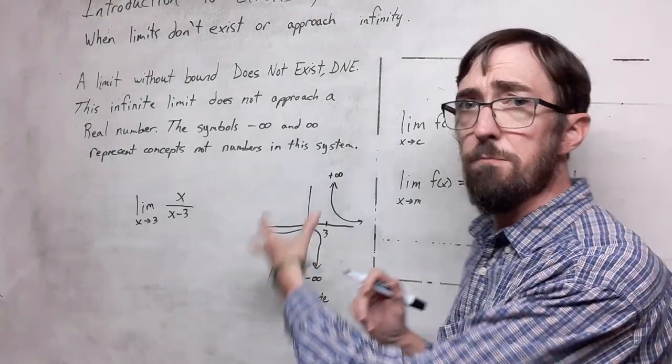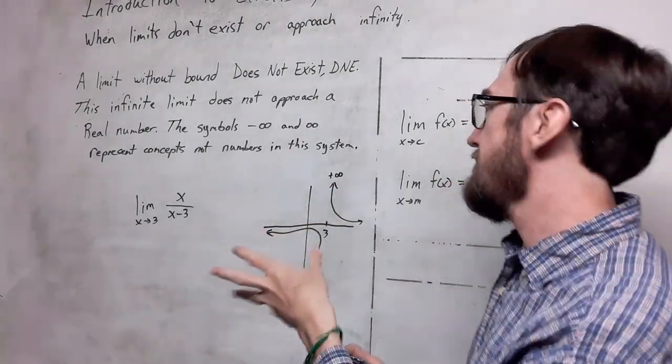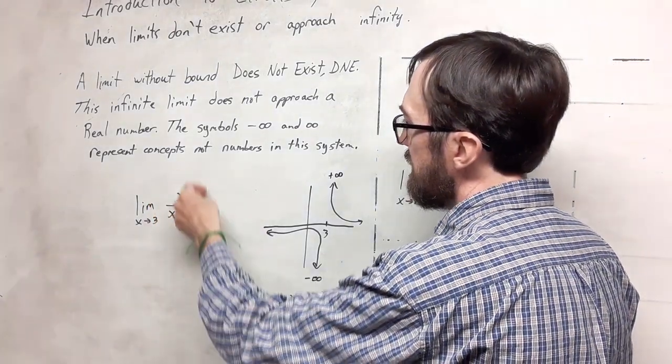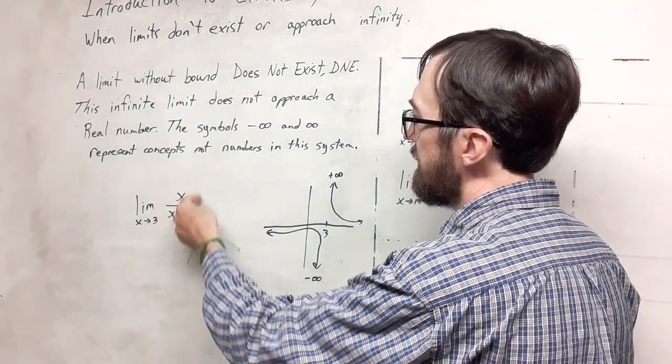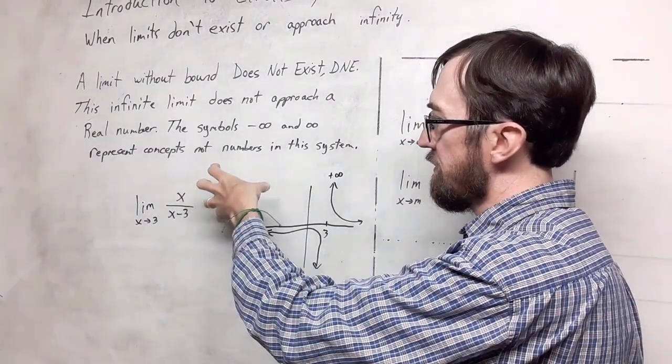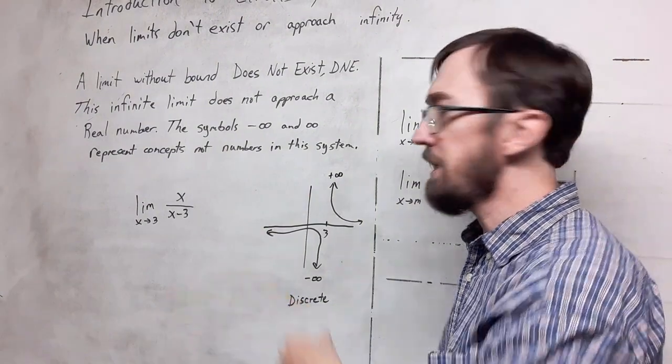Discrete functions have more than one piece to them. Notice that this isn't a piecewise function because the expression is entirely within this rational expression and we don't have separate pieces with domain restrictions for each piece.